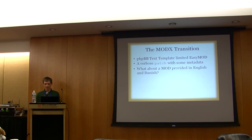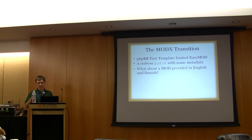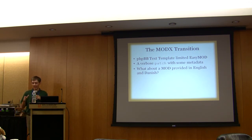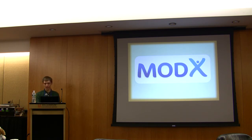So we moved to Mod X essentially because the text template became too limiting. As the slide says, it was a verbose patch that had a little bit of meta — the author name, website, and URL — and it was very specific. You had to have so many spaces; I believe one space between each of the tokens. It was difficult to maintain for both the administrative team and for people using it. Also, if you're a Danish mod author and you wanted to provide English and Danish instructions for your mod, that wasn't supported by the text template natively. So we moved to Mod X — 2006 that was.